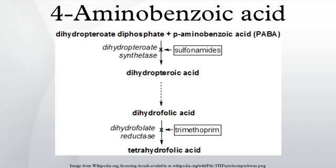The potassium salt of PABA is used as a drug against fibrotic skin disorders, such as Peyronie's disease, under the trade name Potaba. PABA is also occasionally used in pill form by sufferers of irritable bowel syndrome to treat its associated gastrointestinal symptoms, and in nutritional epidemiological studies to assess the completeness of 24-hour urine collection for the determination of urinary sodium, potassium, or nitrogen levels.